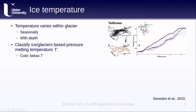Cold ice or cold-based glaciers are glaciers where the temperature is below the pressure melting temperature everywhere. We can see an example of a radargram of a cold-based glacier, Telbren on Svalbard, here. In this figure, purple colors indicate higher reflectance. Within the glacier, we see almost no reflectance, owing in part to the lack of liquid water within the ice.